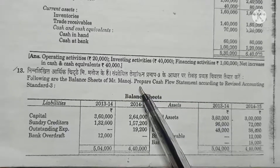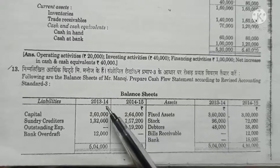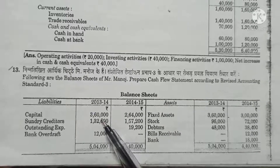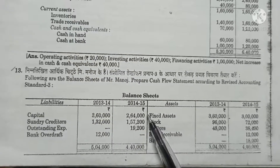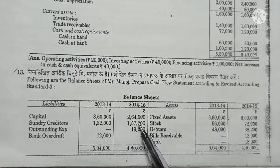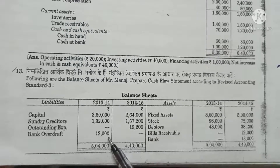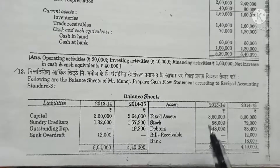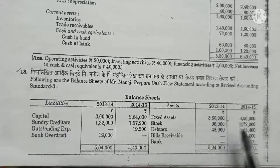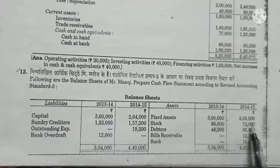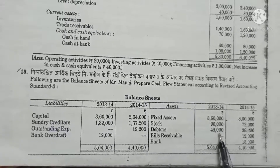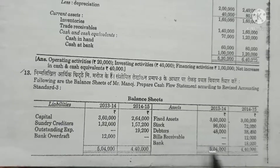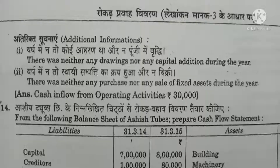Question number 13: From the following balance sheet of Mr. Manoj, prepare a cash flow statement. There are two years — 2014 (opening year) and 2015 (closing year). Capital in opening year was Rs. 3,60,000, higher than closing year Rs. 2,64,000. Creditors in opening year was Rs. 1,32,000, higher than Rs. 1,57,200. Outstanding expense was higher in closing year. Bank overdraft was Rs. 12,000, higher than Rs. 3,60,000. Stocks were Rs. 96,000, higher than Rs. 72,000. Debtors were Rs. 48,000, higher than Rs. 38,400. Bills receivable and bank balances were also given.